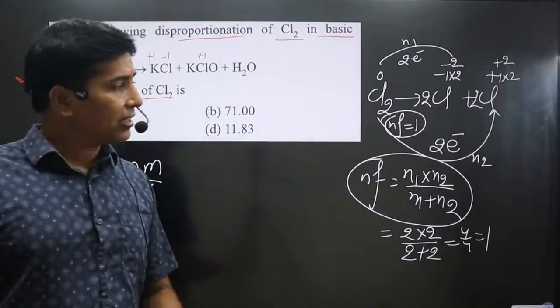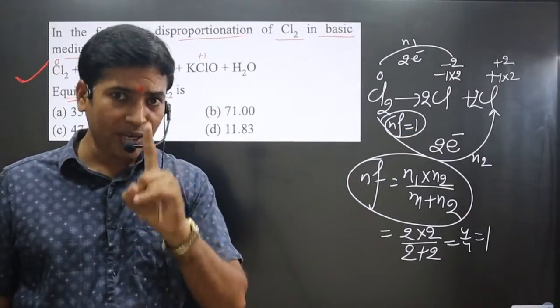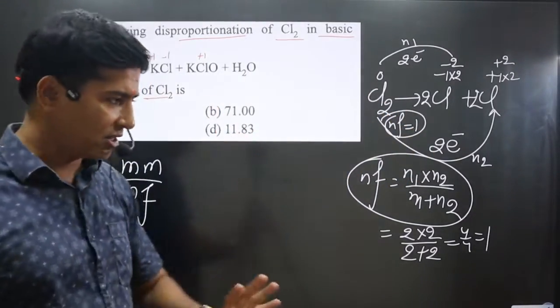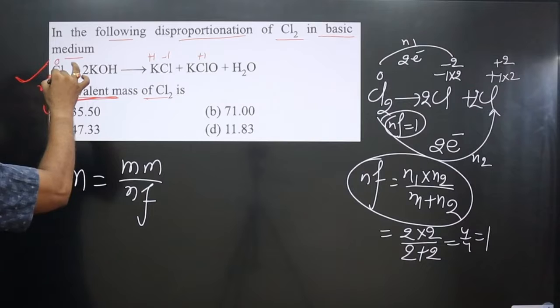Interesting part is that you must balance the number of atoms before balancing the charge and be careful in disproportionate redox reaction especially. Now N factor value for Cl2, we got N factor value is 1.